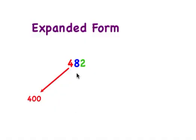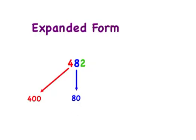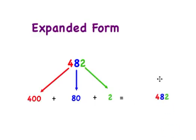What is the value of the digit eight in the tens place? We know that eight in the tens place doesn't just have a value of eight — it actually has a value of 80. And the two in the ones place has a value of two. So 482 written in expanded form is 400 plus 80 plus 2, which equals 482.